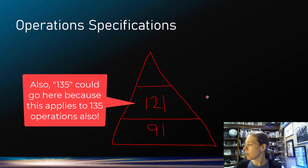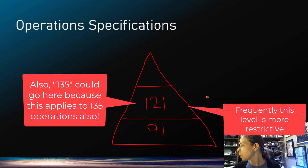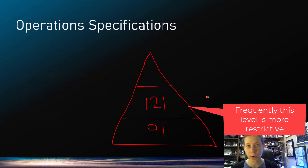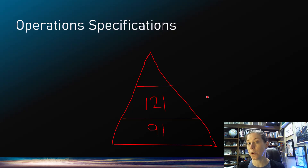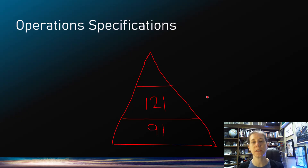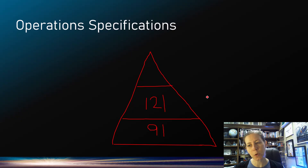For example, Part 91 specifies how many instruments you have to have on an airplane if you're operating under instrument flight. Part 121 goes a little farther and says you also need a third attitude indicator that has to be separately lighted and separately operated for emergency situations. That's not required in Part 91, but it is in Part 121 — so that's a place where 121 essentially trumps 91 with a more strict rule.